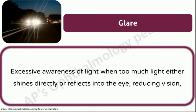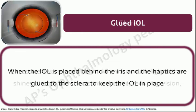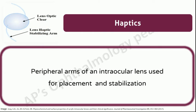Glare: excessive awareness of light when too much light either shines directly or reflects into the eye, reducing vision. Glued IOL: when the IOL is placed behind the iris and the haptics are glued to the sclera to keep the IOL in place. Like scleral fixation of IOL, this is performed when there is a posterior capsule rent.